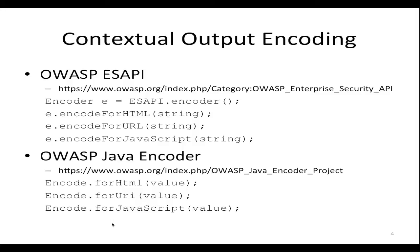OWASP ESAPI, Enterprise Security API, as the name implies, is a very comprehensive security API. There's functionality classes for almost any type of security activity that you might want to do in your application. The little snippet we have here is specifically focused on the encoder class and how we do the appropriate output encoding as the data goes back out to the browser to prevent XSS. The second tool is the OWASP Java Encoder. Unlike ESAPI, the Java Encoder is really focused only on providing the appropriate output encoding functionality to prevent XSS. If you want a more comprehensive API, use ESAPI. If you want something more focused without importing a bunch of other stuff into your classpath, use the Java Encoder. There's also a lot of focus on performance in the Java Encoder.